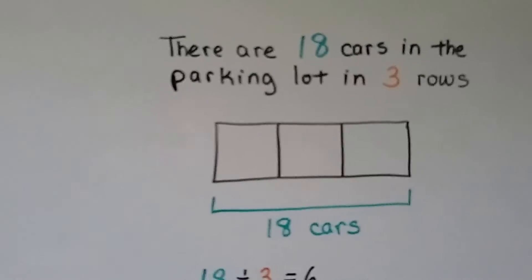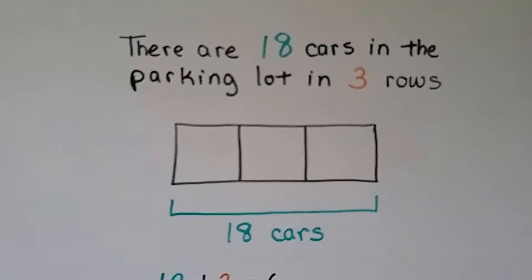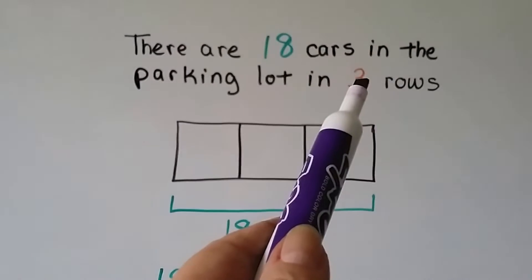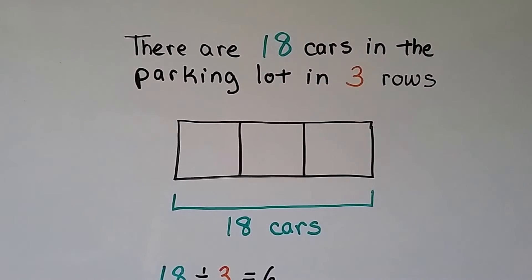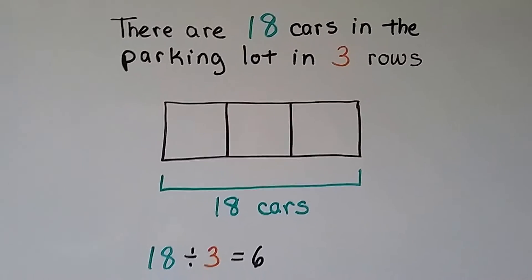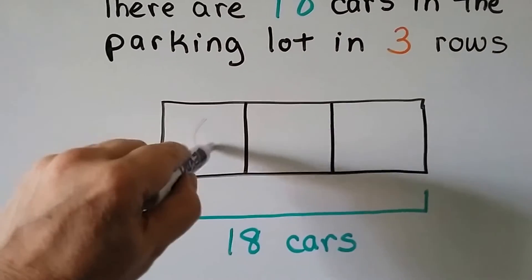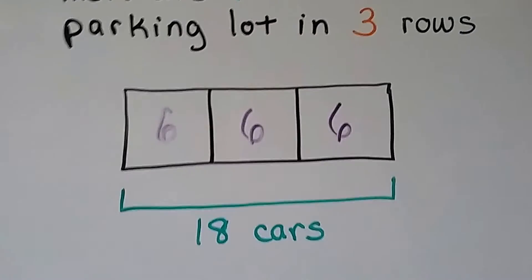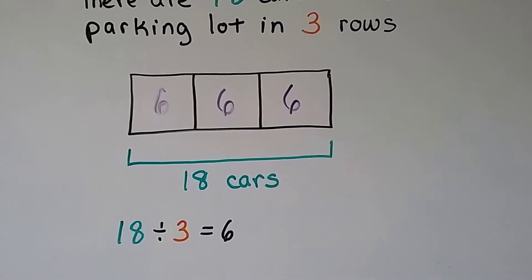There are 18 cars in the parking lot in three rows. So our whole rectangle is the 18. This 3 tells us how many boxes we need. So how many would go in here? Six. We put a 6 in each box. 18 divided by 3 equals 6.